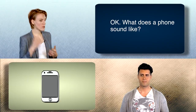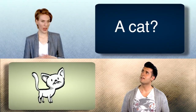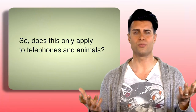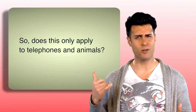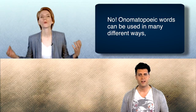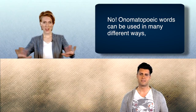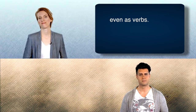What does a phone sound like? Ring. A cat? Meow. Birds? Chirp. So, does this only apply to telephones and animals? No. Onomatopoeic words can be used in many different ways, even as verbs.